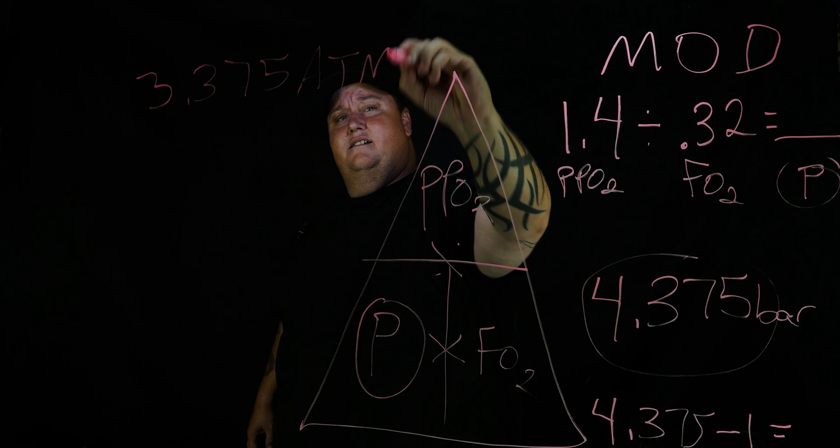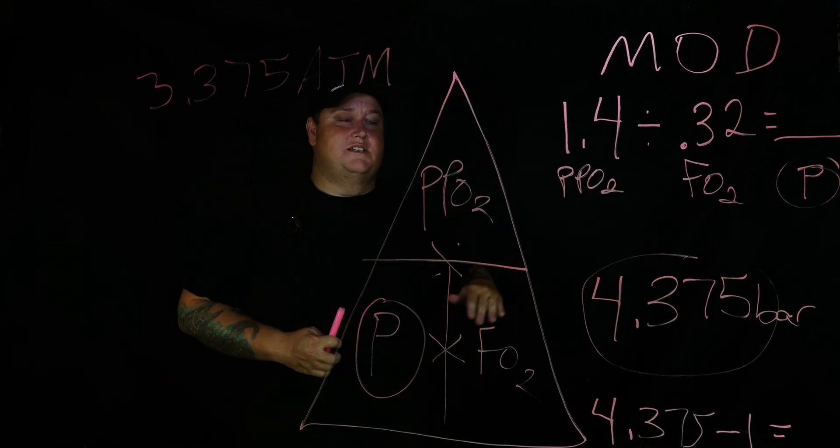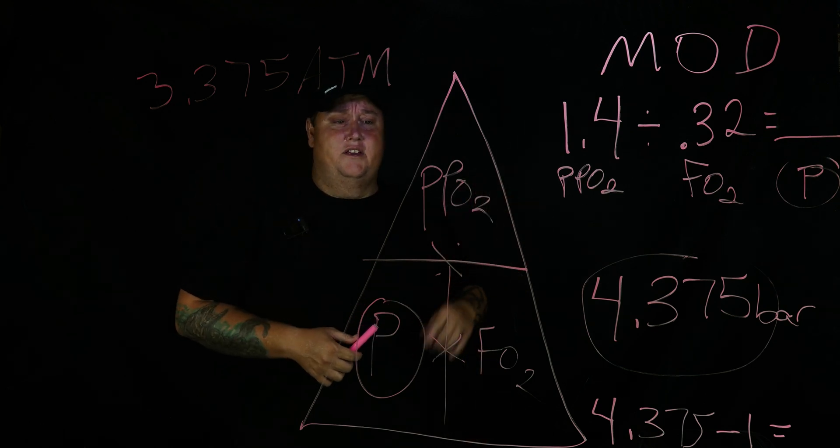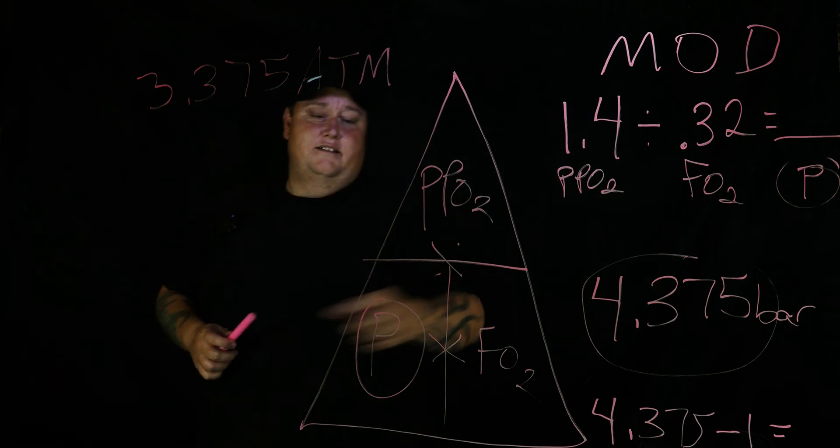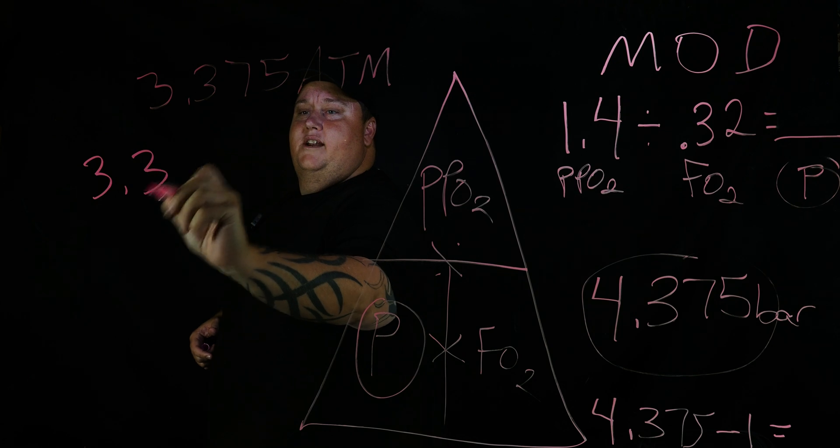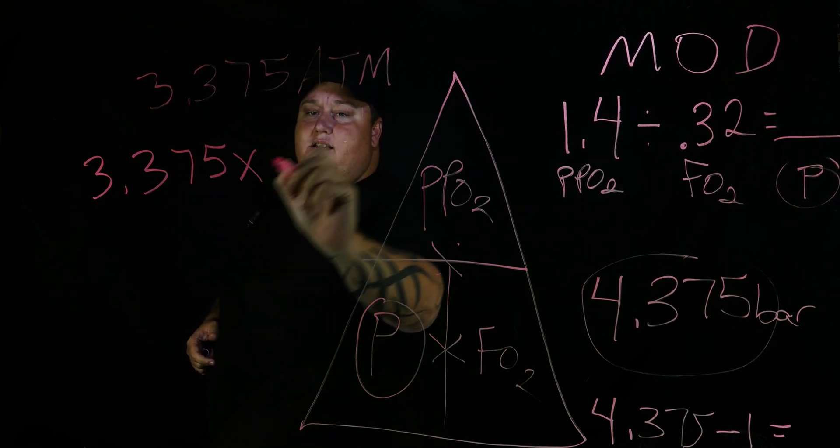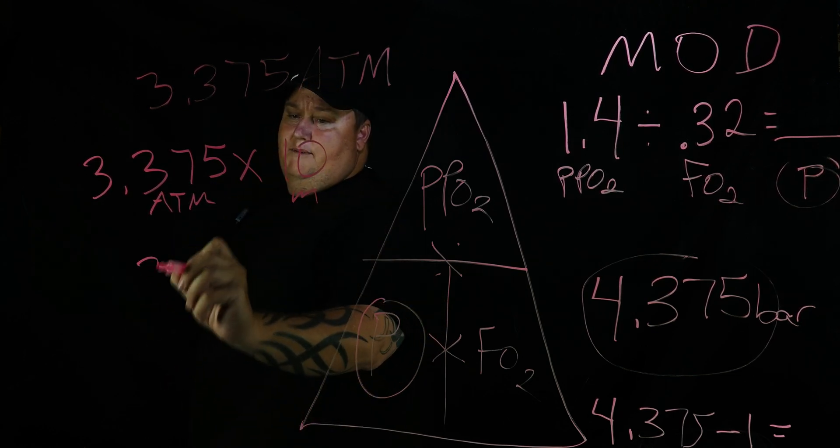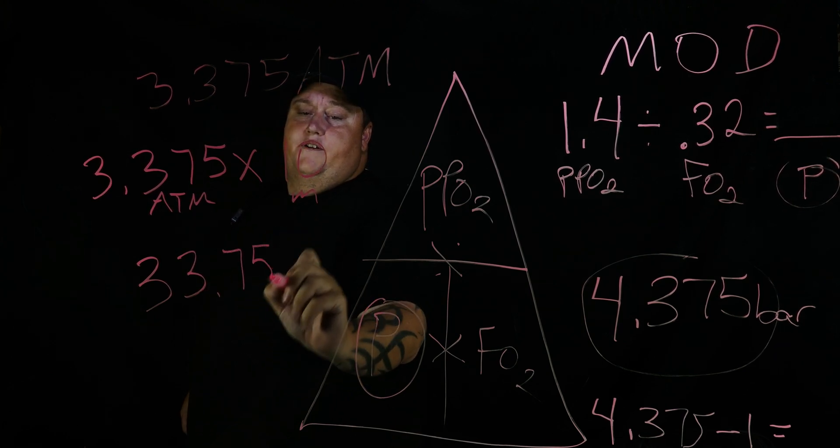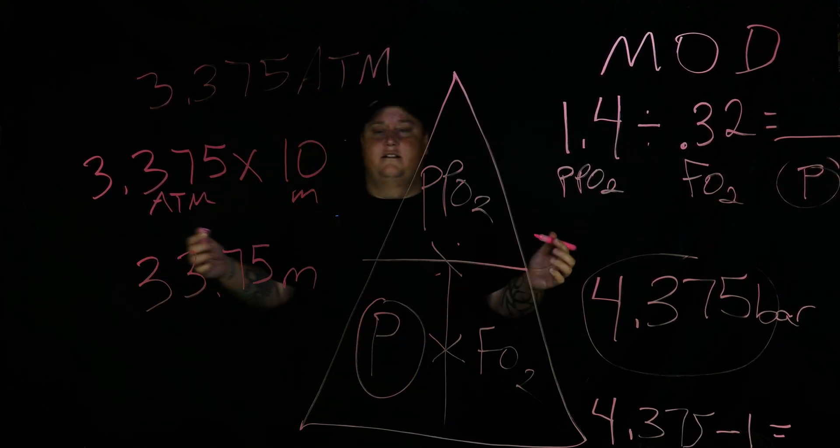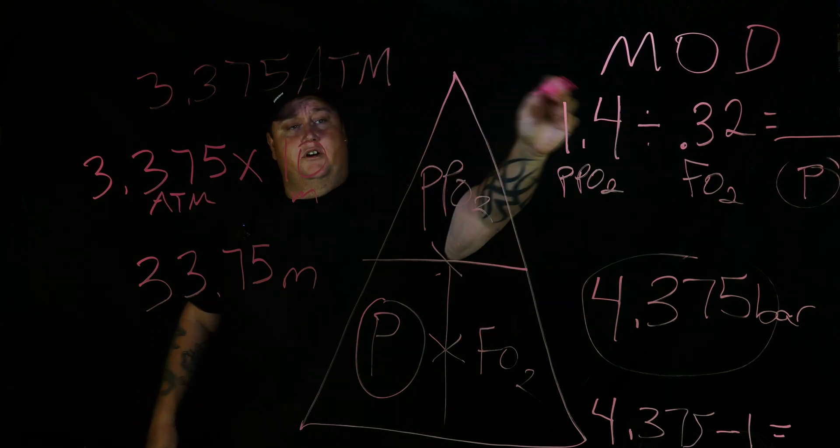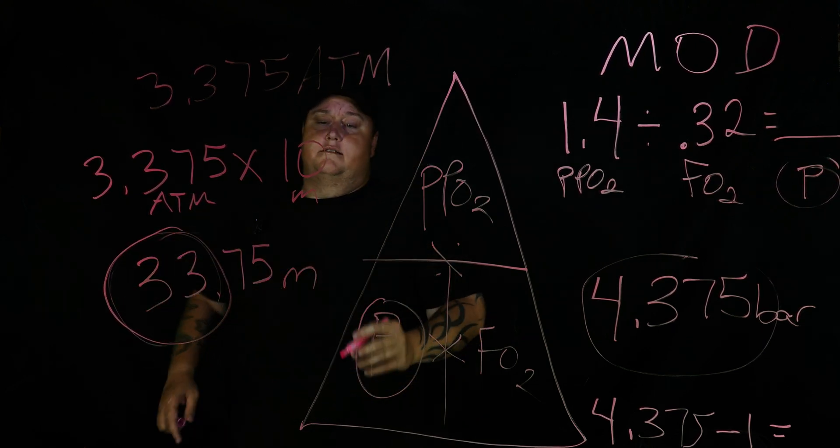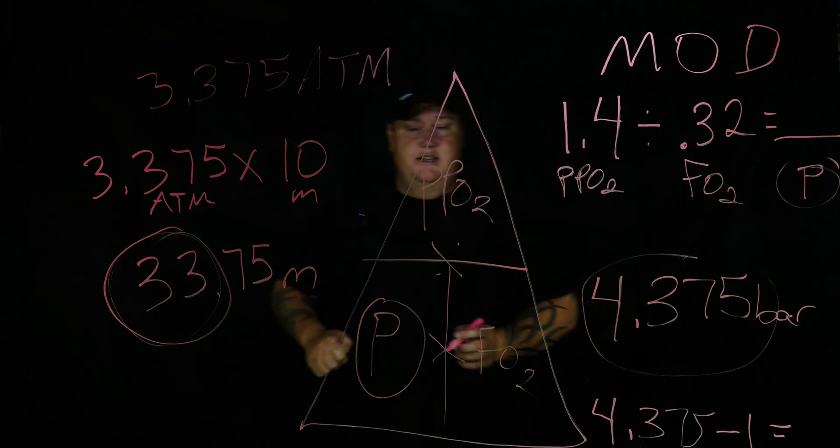Okay, so you remember from your open water course that every 10 meters is another atmosphere, right? Or 33 feet if you're on the imperial system, or I think it's 34 feet in fresh water. So what I want to do is 3.375 times 10 meters—this is my atmosphere times meters—and it should come out to 33.75 meters. And there you have it. So my max operating depth for 32 percent nitrox is 33 meters. I'm just going to round it down to be a little bit conservative. So now we know our ppO2, our FO2, and our pressure.